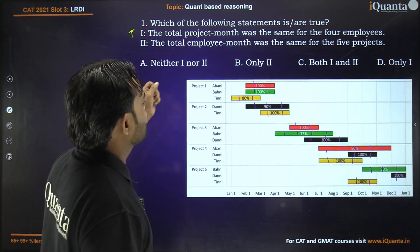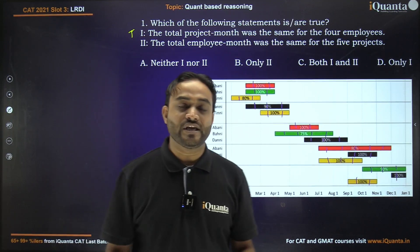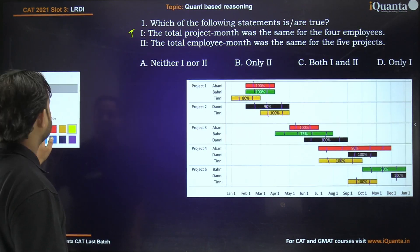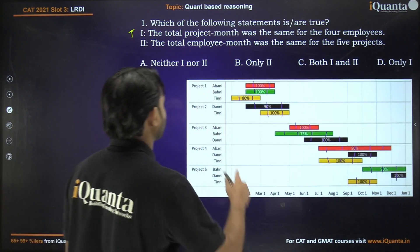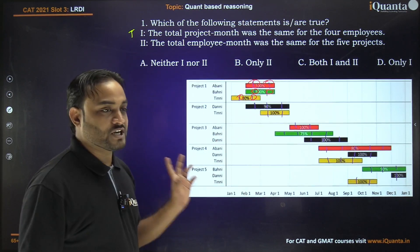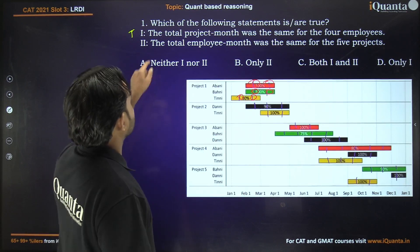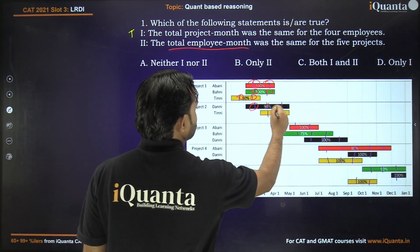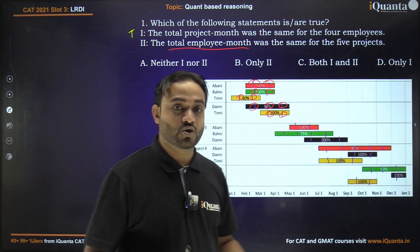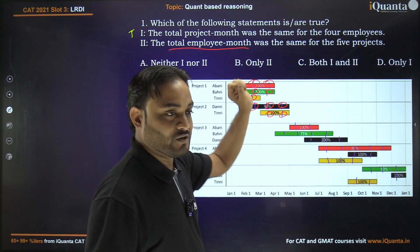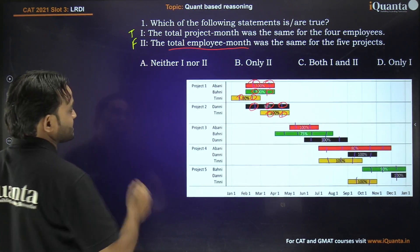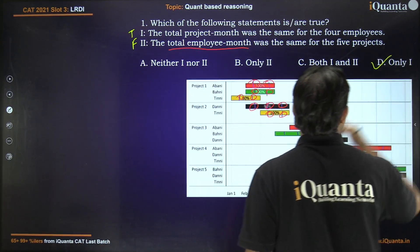What about statement 2? It says the total employee month was the same for all 5 projects. For each project, it's the sum of all months that all employees worked. For project 1, it's 6 total employee months. For project 2, it's 5. As you can see, project 1 and project 2 have different total employee months, so this statement is definitely not true. Hence, only statement 1 is correct — option D.